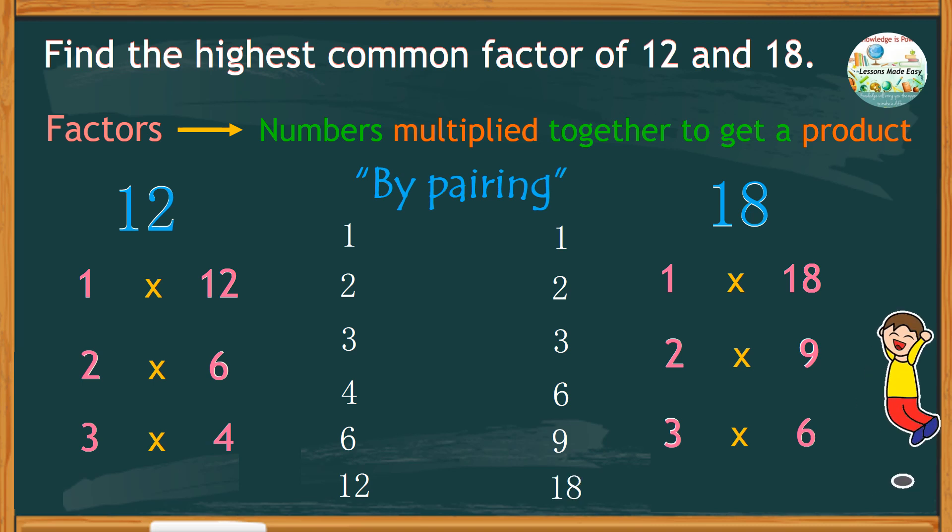Now that we have the factors of 12 and 18, let's see what numbers are common in both. We have 1, 2, 3, and 6. Among the common factors, obviously, the highest number is 6, and therefore, the highest common factor of 12 and 18 is 6.